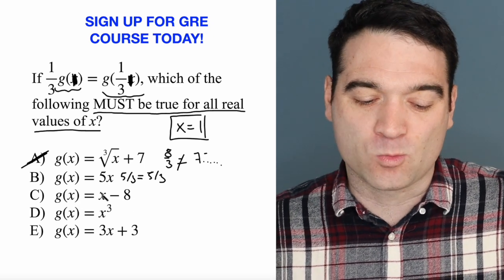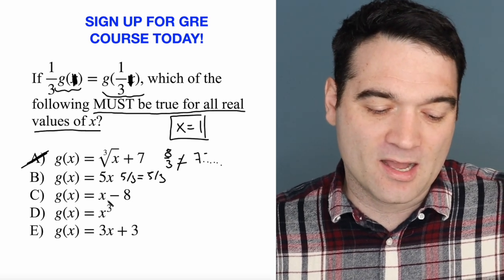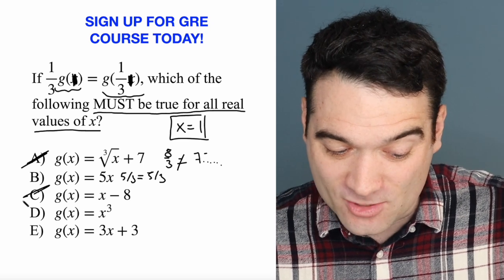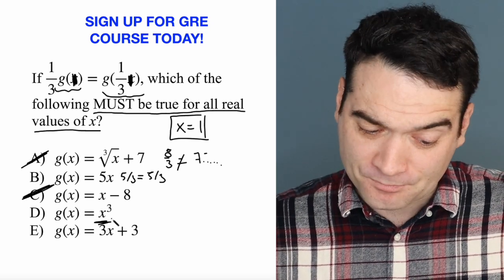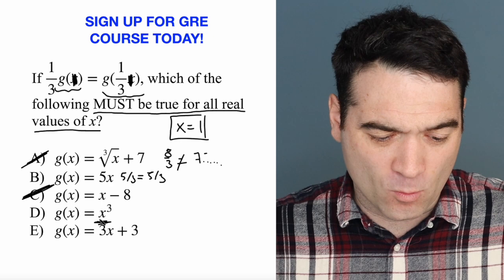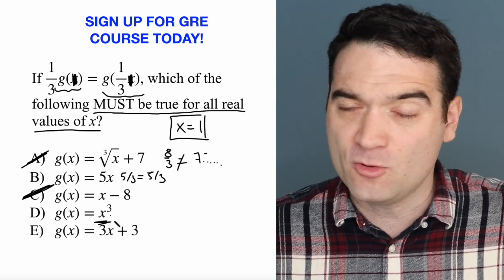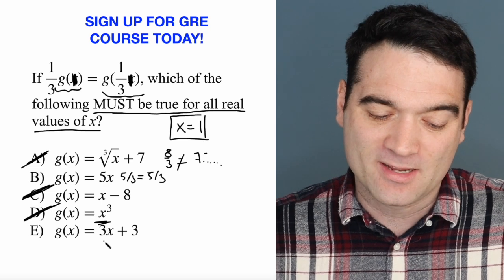g of one here is one minus eight, negative seven. Is that equal to one-third minus eight? No, it's not. So that's out. How about this one? g of one would be one cubed. Is that equal to one-third cubed? No, it's not. So that's out. How about this one?